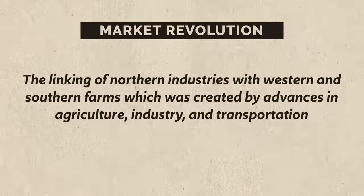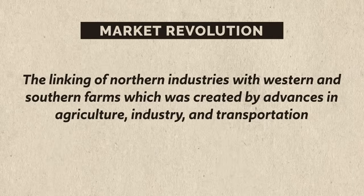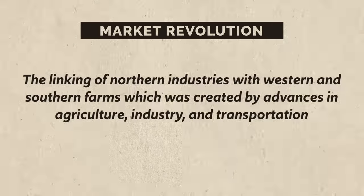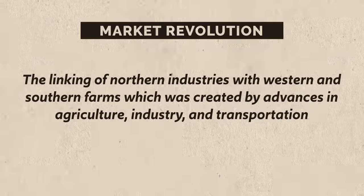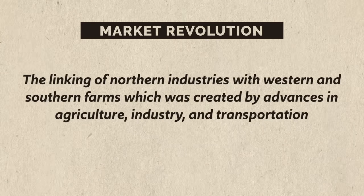I'm in the mood to begin with a definition. What is the Market Revolution? Essentially it was the linking of northern industries with western and southern farms, which was created by advances in agriculture, industry, and transportation. What you really need to take from that definition is that this revolution coordinated industry in the United States — all the different regional sectors of the economy really knit themselves together into a singular economic entity. This was a seriously big deal because it marked America's transition from mainly an agrarian society into a firmly capitalist society.